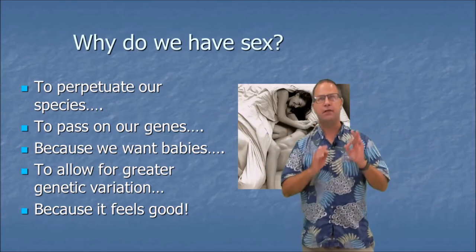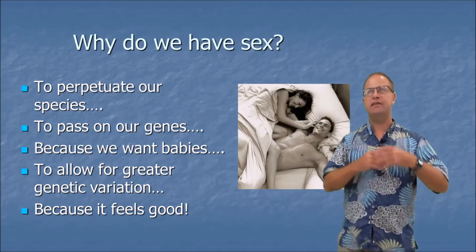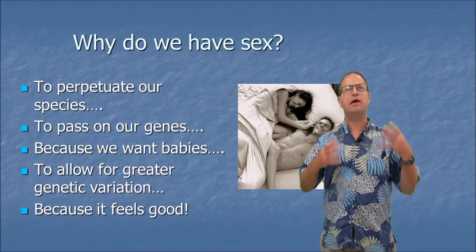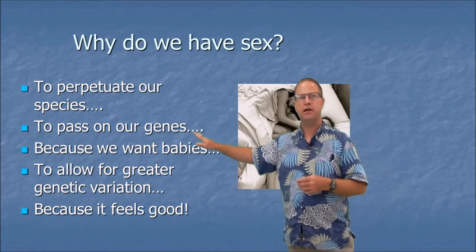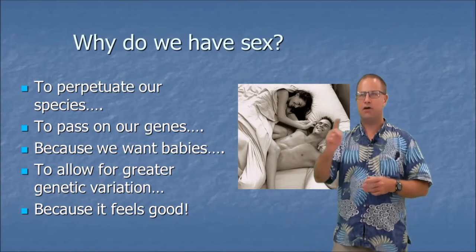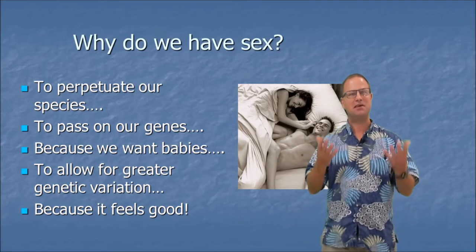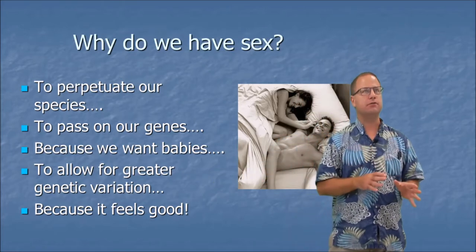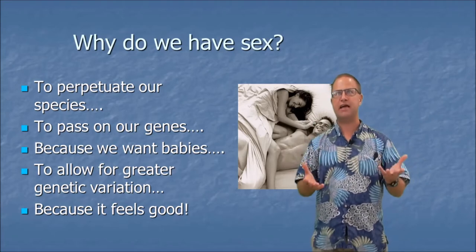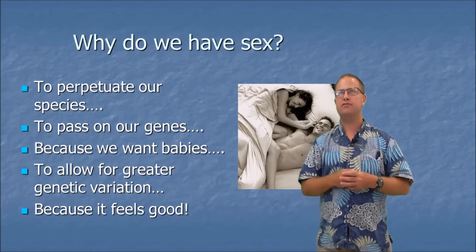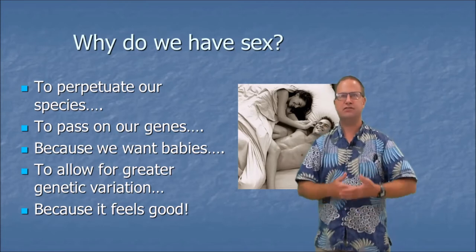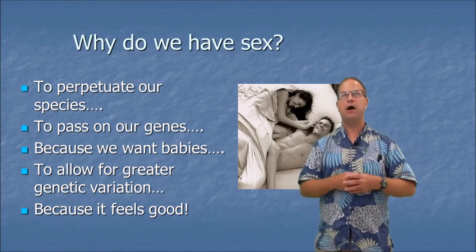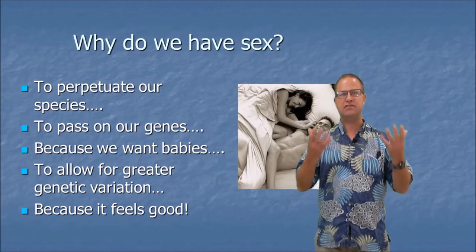Some people say to pass on the genes — in an evolutionary sense, individuals that pass their genes on to more offspring are winning at the evolutionary game. Some say we have sex to make babies, which is also true. Another answer is to allow for greater genetic variation, which is absolutely correct. Not all living things have sex; some reproduce through parthenogenesis, producing offspring genetically identical to themselves. We think organisms that combine genes of a male and female are more resilient to environmental changes, which is why sex has evolved.